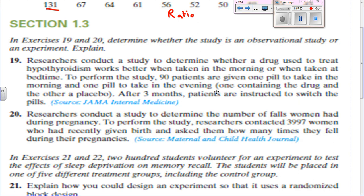Researchers conduct a study to determine the number of falls women had during pregnancy. To perform the study, researchers contacted women who had recently given birth and asked them how many times they fell. That's observational — they are not pushing pregnant women down to see how it affects the baby.